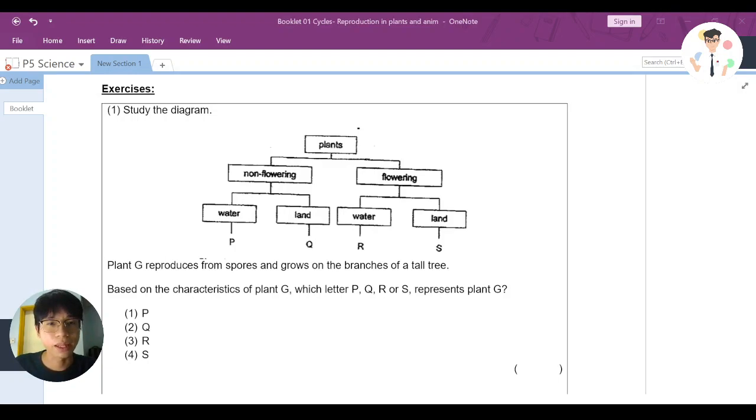Study the diagram. Plant G reproduced by spores and grows on the branches of a tall tree. Based on the characteristics of Plant G, which letter P, Q, R, or S represents Plant G?